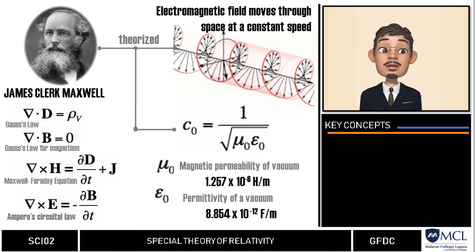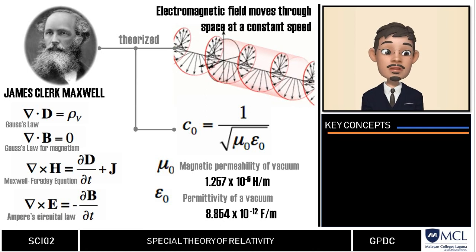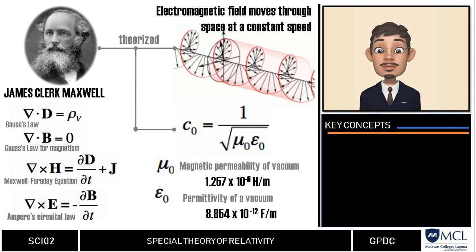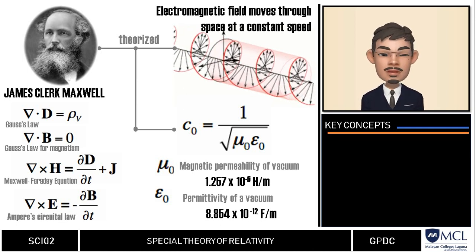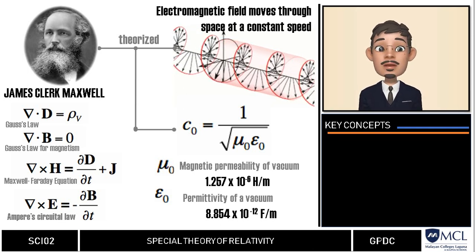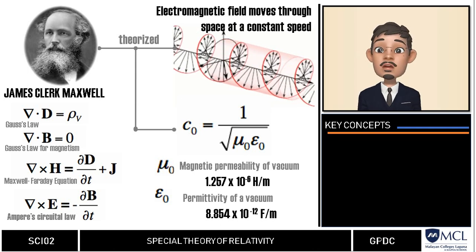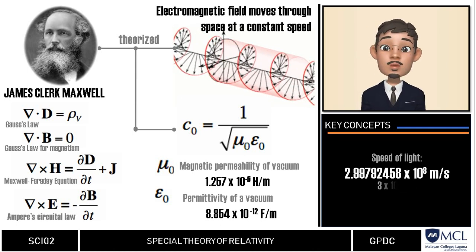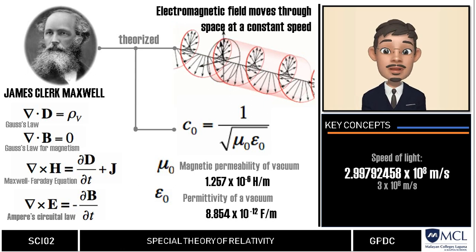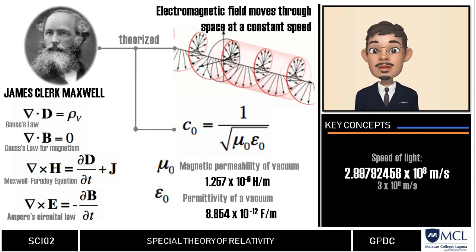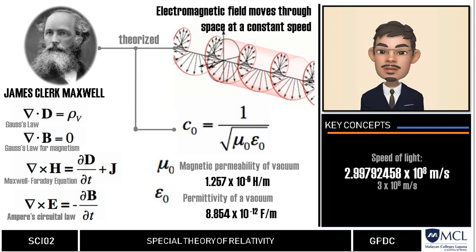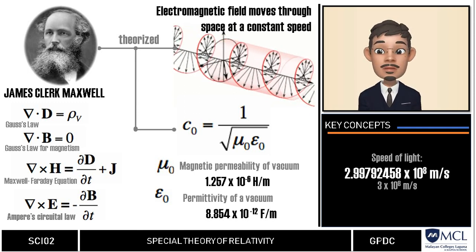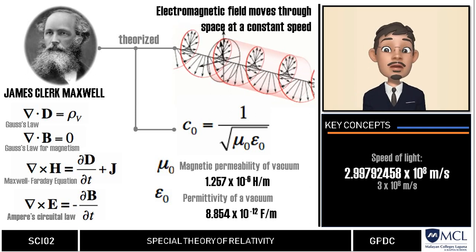And epsilon sub zero, the permittivity of a vacuum, equal to 8.854 times 10 to the negative 12 farads per meter. Solving Maxwell's equation for the speed of light, he computed the value c equals 2.99792458 times 10 to the 8 meters per second. From this, Maxwell's equation proved that the speed of electromagnetic waves is universal.